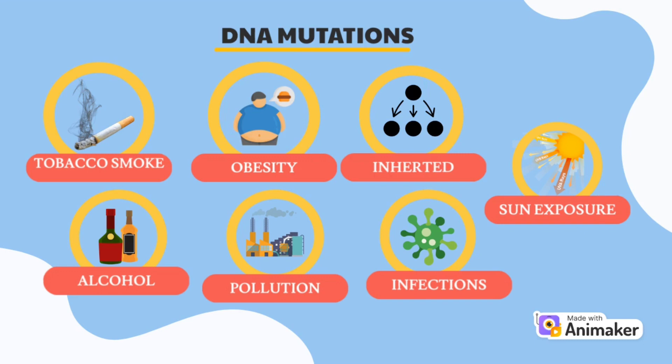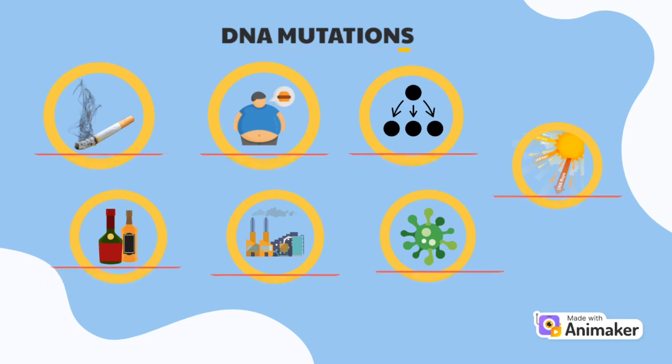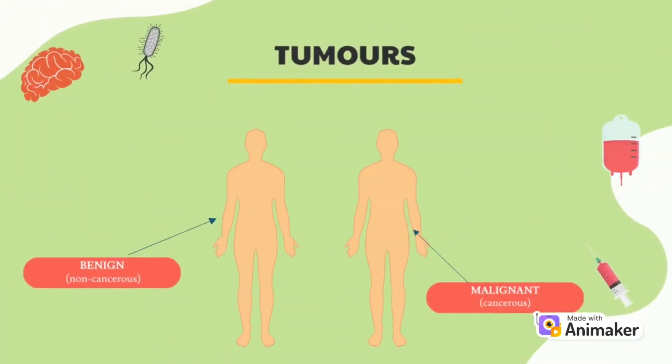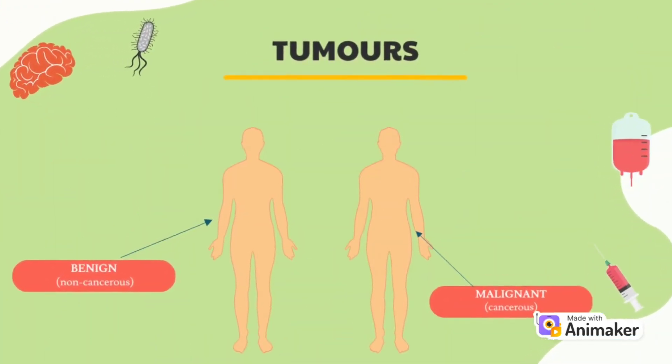Mutations are often harmless, but sometimes cause cells to copy and grow uncontrollably, which is how cancer starts. These abnormal cells keep creating copies of themselves, growing into a clump or mass of cells called a tumor. Some tumors stay in one place and do not spread, known as benign or non-cancerous. Tumors can also be malignant or cancerous, which means they can spread to other parts of the body.